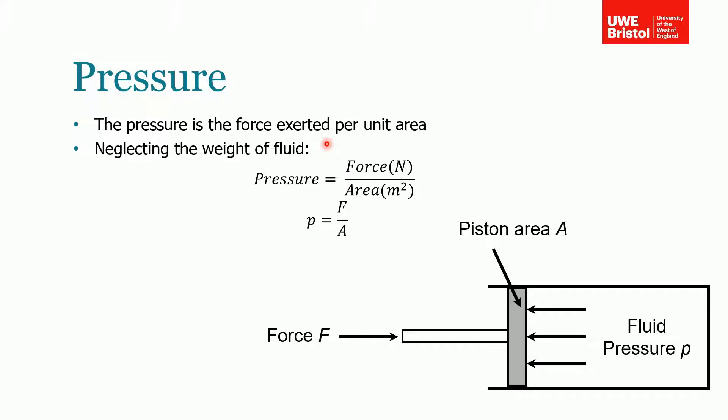The next one to define is pressure. Pressure is the force that's exerted per unit area. If we consider this piston here, we're applying a force onto this piston. Assuming that this is perfectly sealed, there's this piston area. If this isn't moving, all the forces are balanced. The force acting over this area is producing a pressure which is equal to the fluid pressure inside this piston which is resisting it. These two pressures would be equal if this wasn't moving.